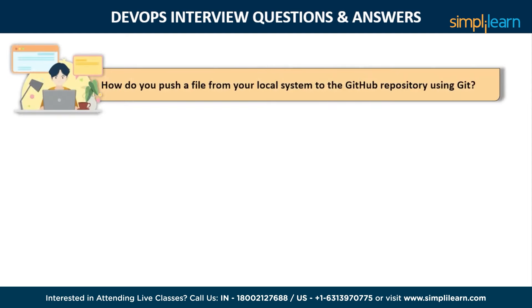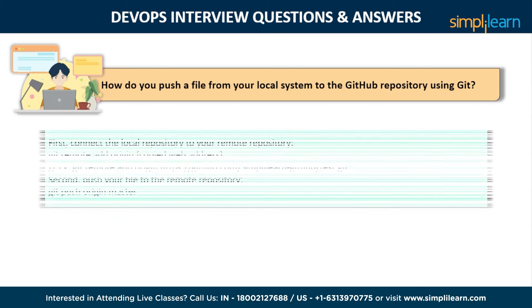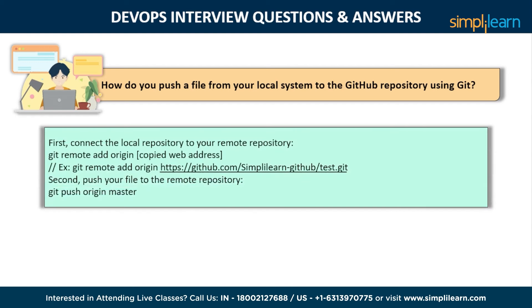The next question is: how do you push a file from your local system to the GitHub repository using Git? First, connect the local repository to your remote repository using the command: git remote add origin. The second step is to push your file to the remote repository.